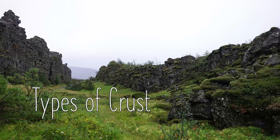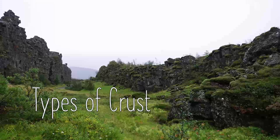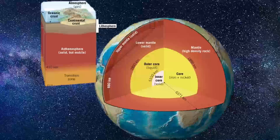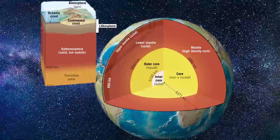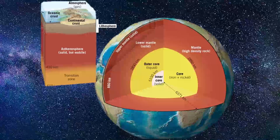Before we can really understand the way tectonic plates interact, we need to understand some of the basic properties of the two different types of crust, ocean crust and continental crust. Remember that the crust is the uppermost rigid, solid, and cold part of the lithosphere, which is the uppermost part of the geosphere.